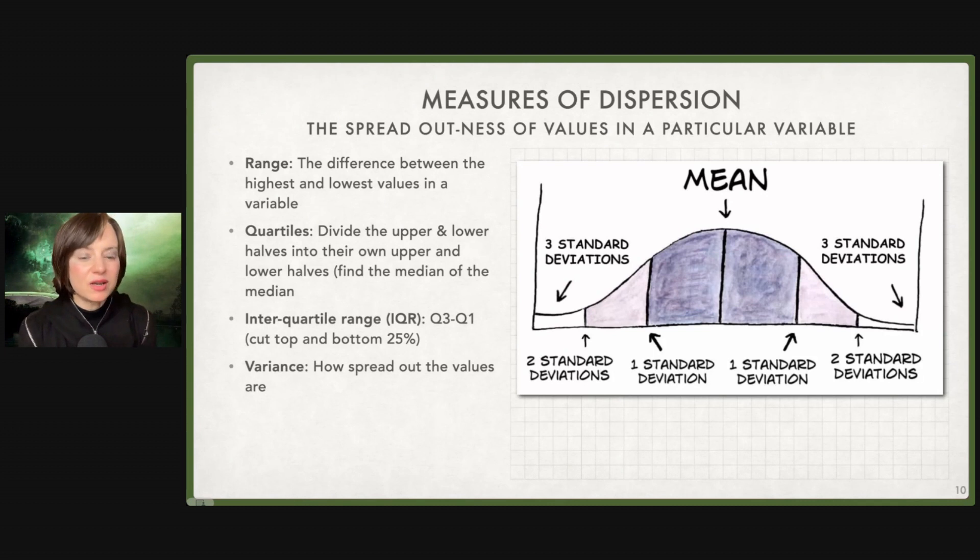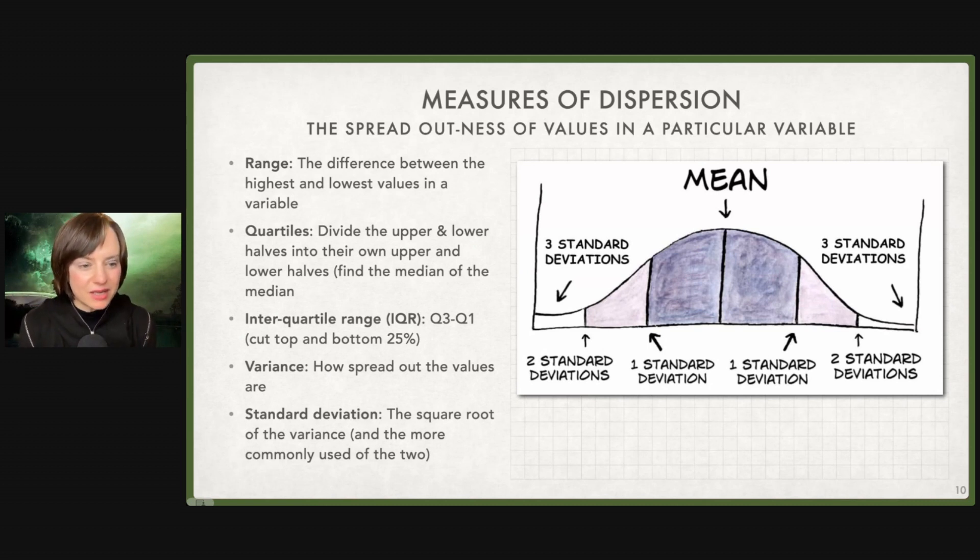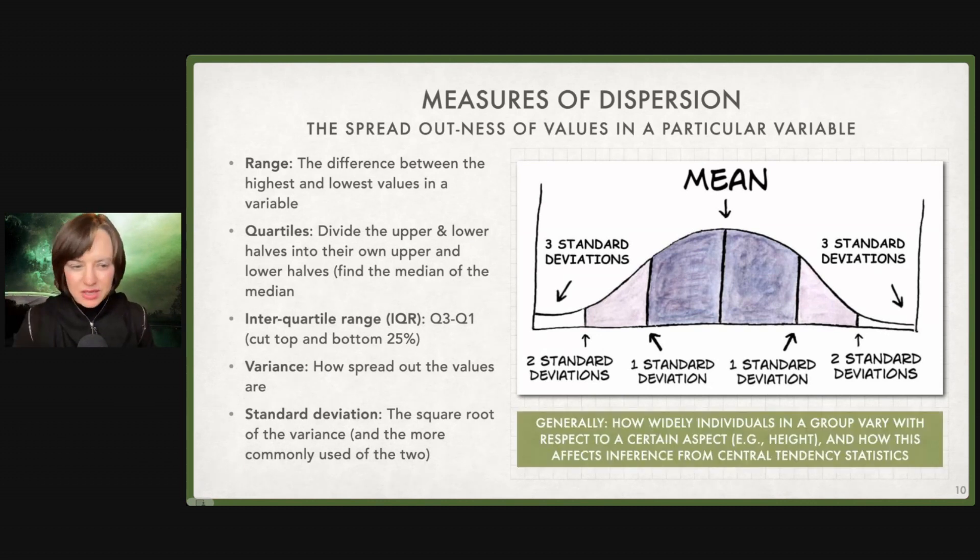But here's something that I'm more partial to: the variance, which is a measure of how spread out the values are overall. And more practically, what you'll see in everyday use, the standard deviation. This is the square root of the variance, and much more commonly used. Generally speaking, how widely individuals in a group vary with respect to a certain aspect. There's the mean height of people, but we also want to know the variation. Is there a high variation, a high standard deviation, a broad range, or is it relatively narrow and everyone is roughly the same height?